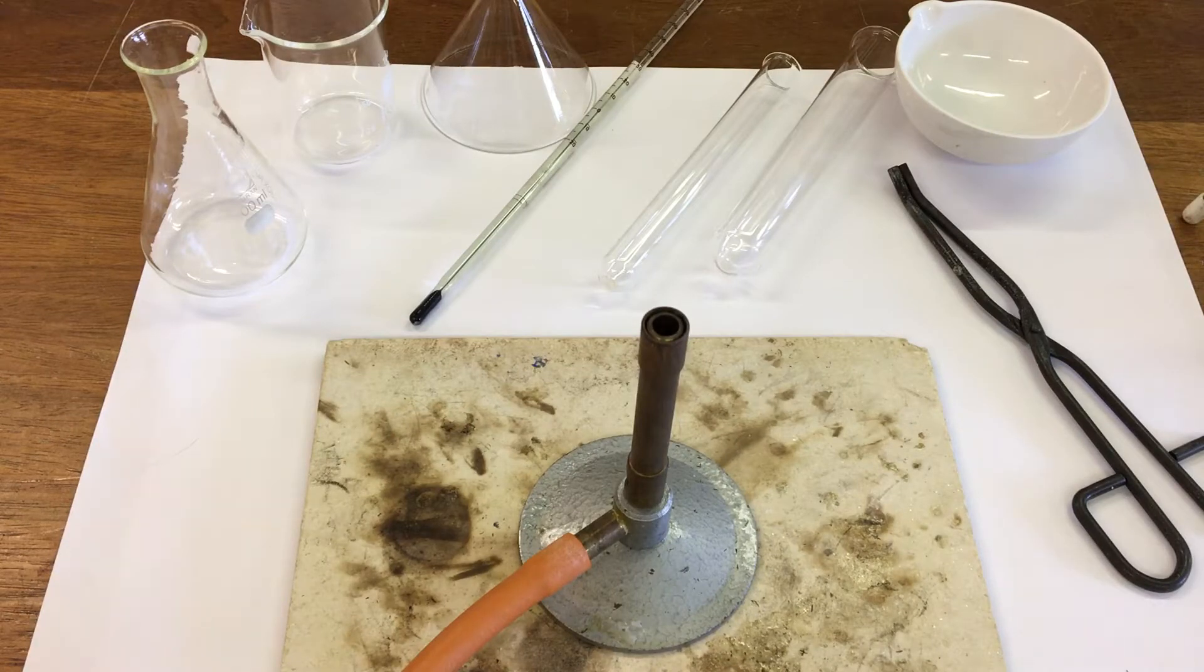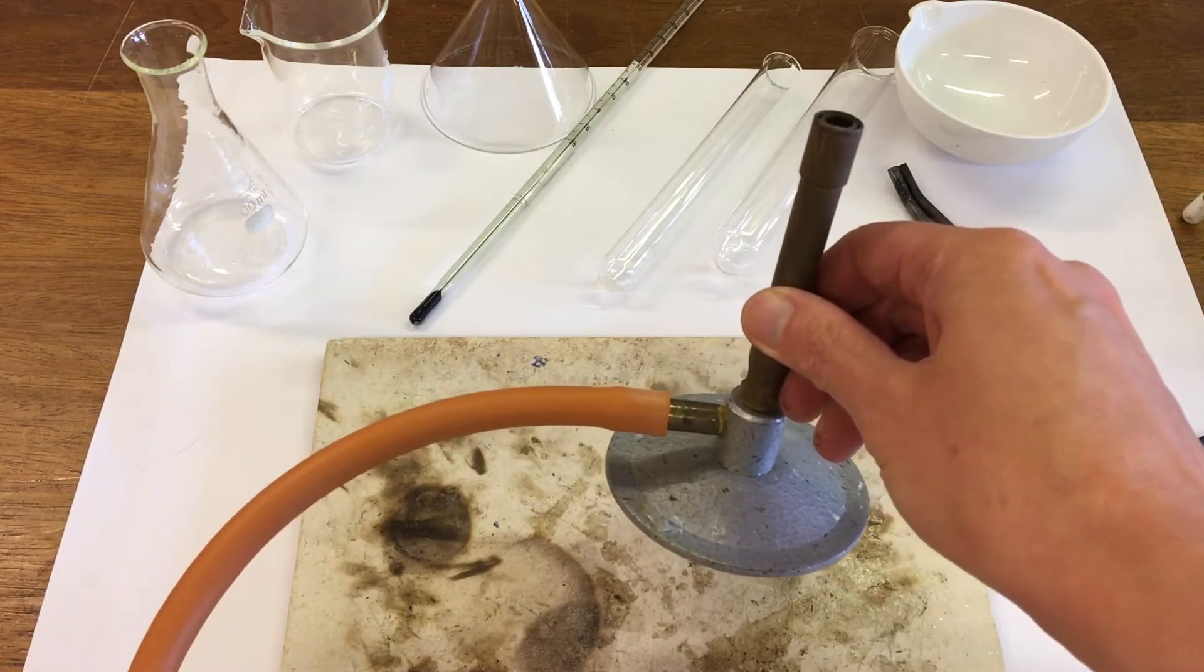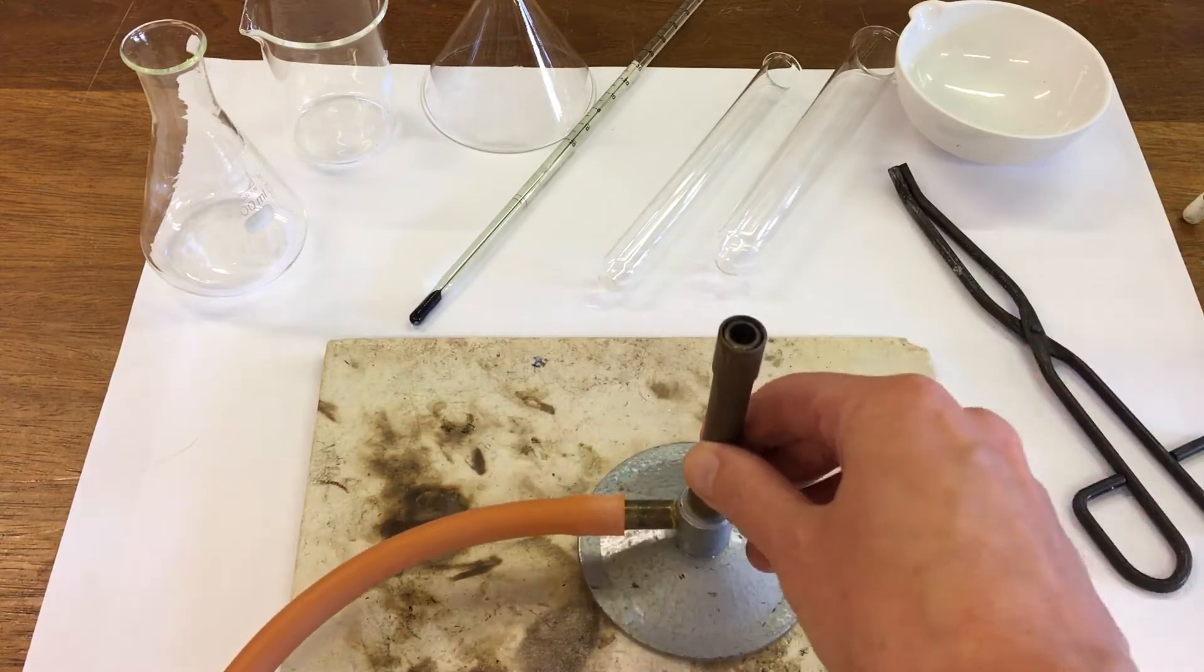Today we're going to look at some common laboratory apparatus. Our first item is the Bunsen burner. This is a Bunsen burner here with this pipe. It connects to the gas supply and we get a flame that comes out here for heating things.